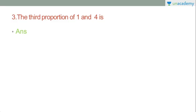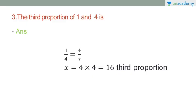Moving to the third question: find the third proportion of 1 and 4. The basic concept is: the third proportion means a by b is equal to b by c. So if a:b = b:c, then c is b squared divided by a. Here we find the third proportion using this formula.